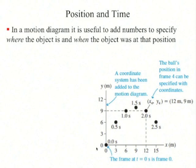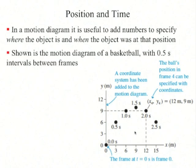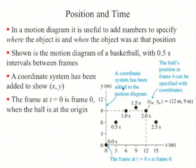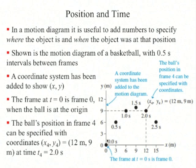In a motion diagram, it's useful to add numbers to specify where and when the object was at a given position. For example, here's a motion diagram with 0.5-second intervals between frames, and a coordinate system has been added to show x and y. The frame at t equals 0 is frame 0, when the ball is at the origin. The ball's position in frame 4 can be specified with coordinates x₄ equals 12 meters.